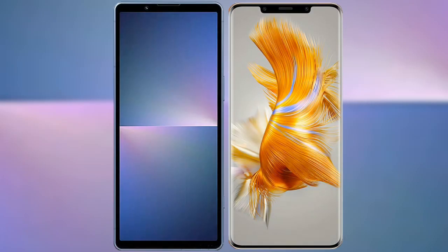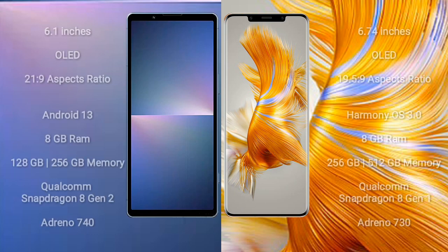I will compare the new Sony Xperia 5 Mark V with the Huawei Mate 50 Pro. The Sony Xperia 5 Mark V comes with a 6.1-inch OLED display with an aspect ratio of 21:9. The Huawei Mate 50 Pro comes with a 6.74-inch OLED display with an aspect ratio of 19.5:9.